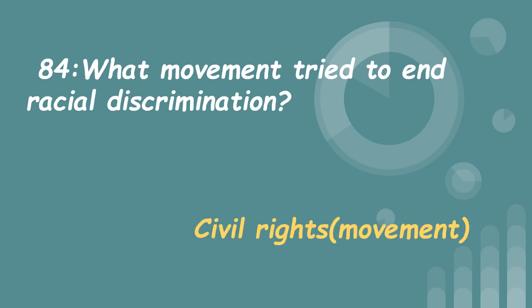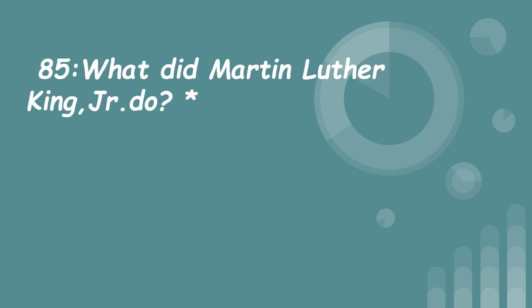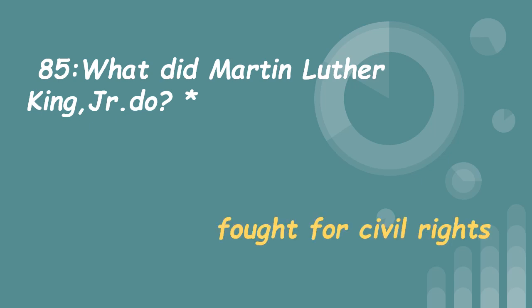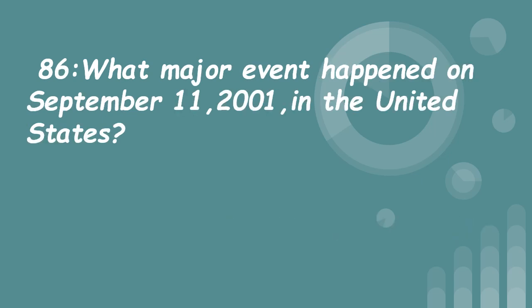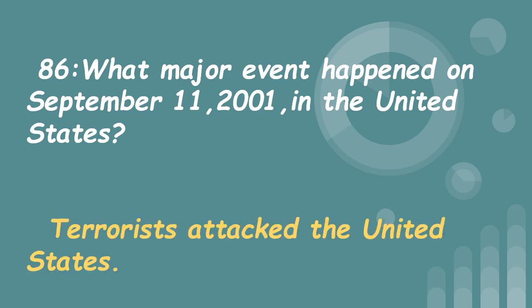85. What did Martin Luther King Jr. do? Fought for civil rights. 86. What major event happened on September 11, 2001 in the United States? Terrorists attacked the United States.